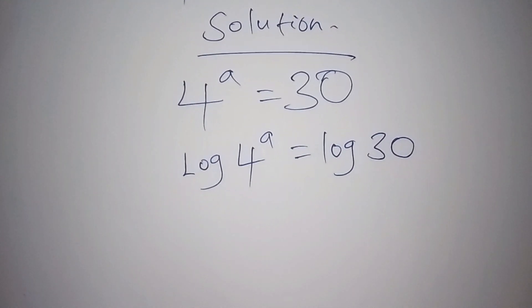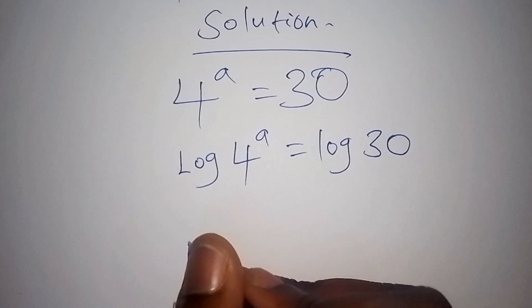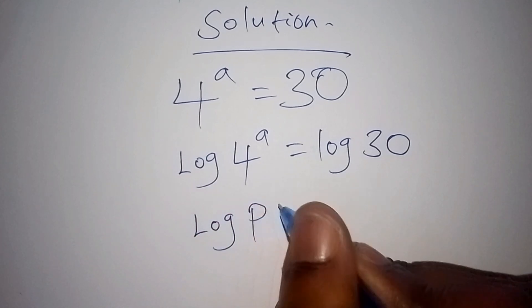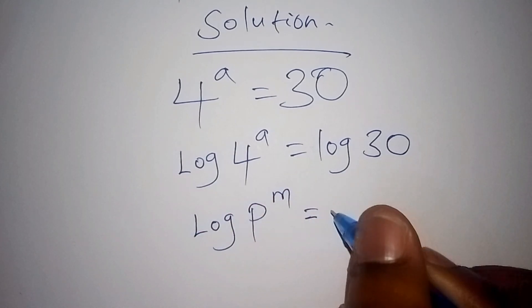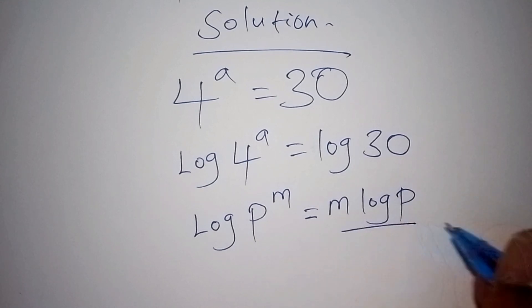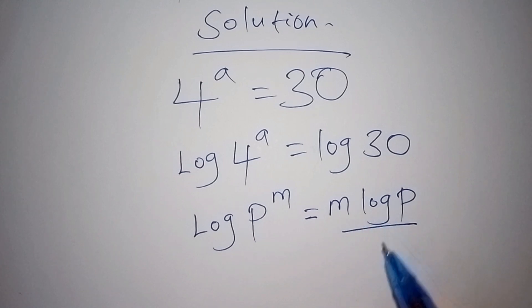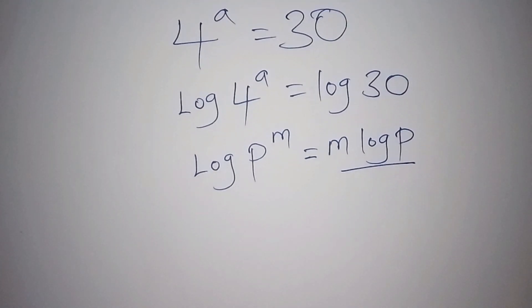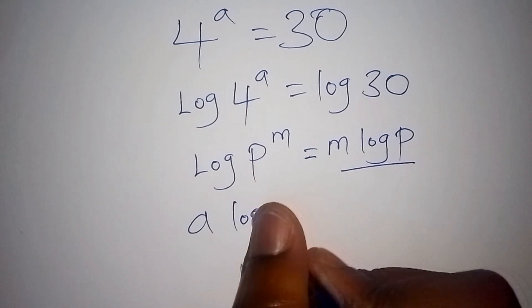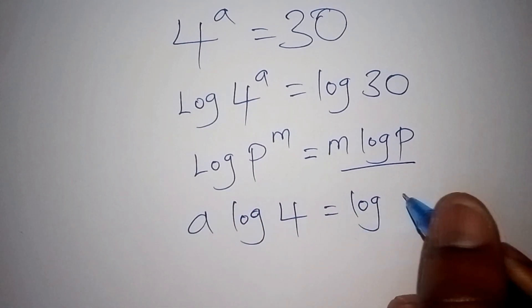Now we need to apply the law of logarithms: log of P to the power of M can also be written as M log P. So we express log 4 to the power of A in that form, giving us A log 4 equals the log of 30.